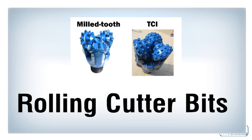Rolling cutter bits have 3 cones. Many people may also call them roller cone bits or tricone bits. Each cone can be rotated individually when the drill string rotates the body of the bit. The cones have roller bearings fitted at the time of assembly. Rolling cutter bits can be used to drill any formations if the proper cutter, bearing, and nozzle are selected.